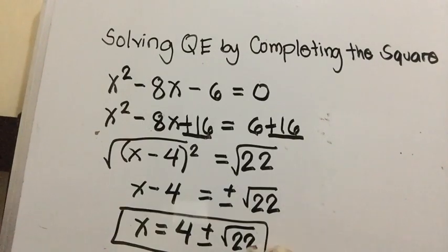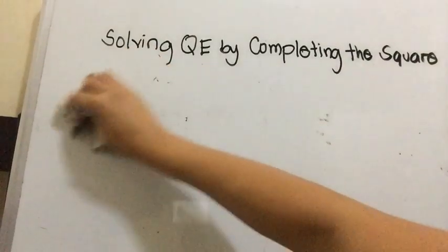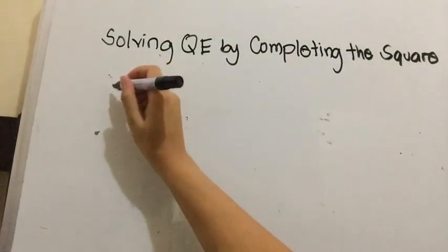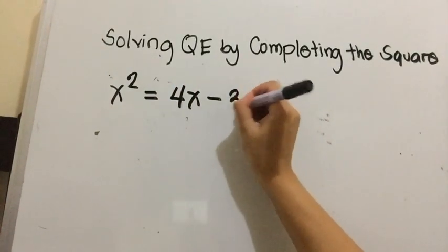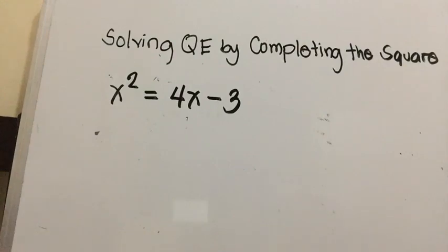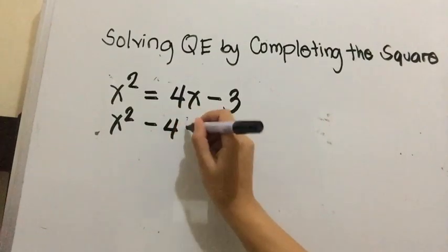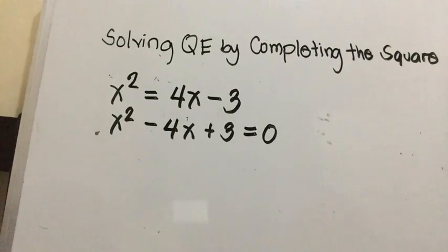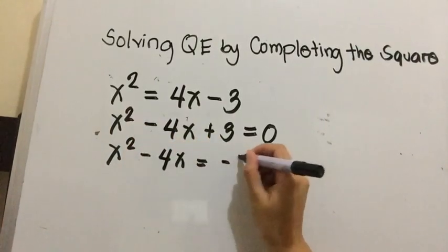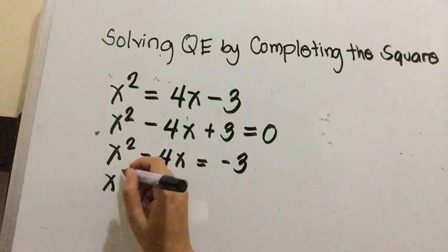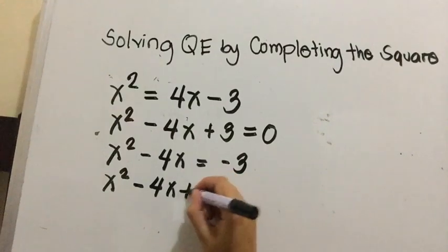Let's have another example. We're given x squared equals 4x minus 3. First, let's transpose the values of b and c to make it standard form: x squared minus 4x plus 3 equals 0. Since this is already in standard form, transpose 3 to get x squared minus 4x equals negative 3. We need to find the third term. The middle term coefficient is 4 divided by 2 is 2, and 2 times 2 is 4, so we add plus 4 on both sides.